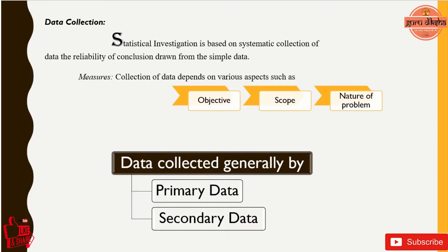Data collection: statistical investigation is always based on systematic collection of data and variability of conclusions drawn from the sample data. We have some measures to collect the data. Collection of data depends on objectives, scope and nature of the problem, and usually data can be collected generally by primary data and secondary data.